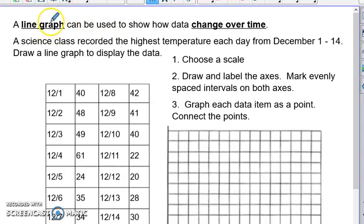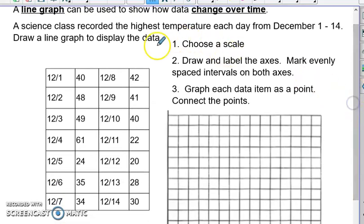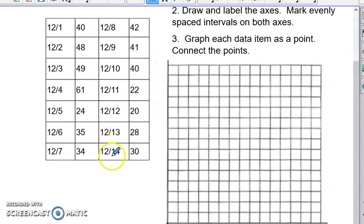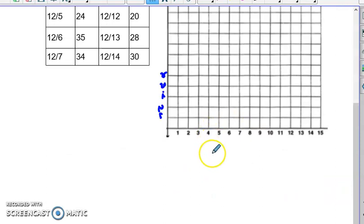Next one is a line graph. When do you want to choose a line graph? When you want to show a change over time. So the data we have here is the temperature in December from the 1st of December to the 14th. So again, we're going to choose our scale. I think we'll go our lowest temperature looks like it's about 20, and our highest temperature, it went up to 61 degrees. So I think we're going to go in groups of five again. 5, 10, 15, 20, 25, etc. Our x-axis is going to be our date. And our y-axis is going to be the temperature. Here we go. We're just going to plot these points.